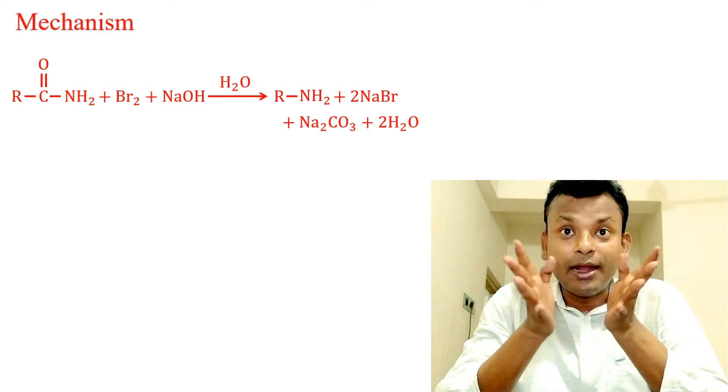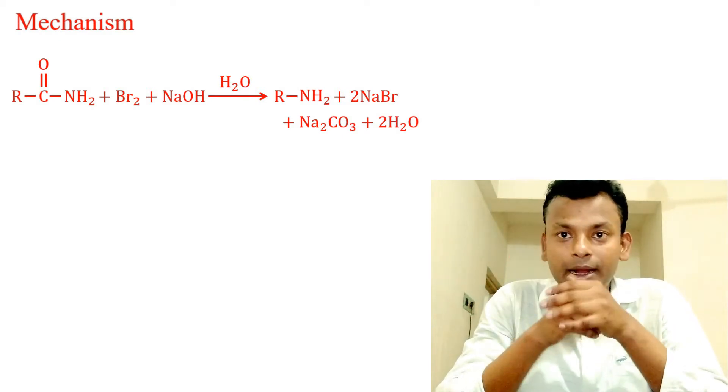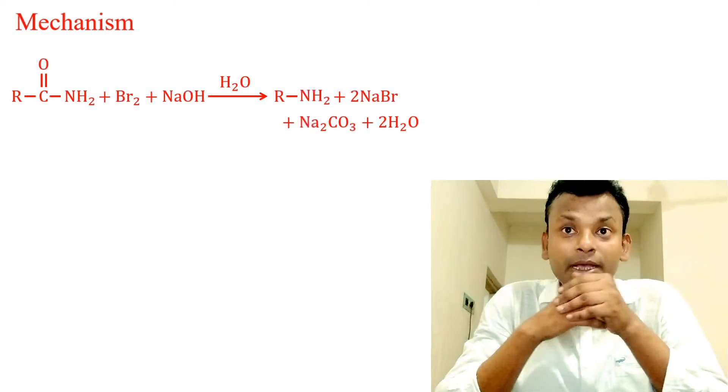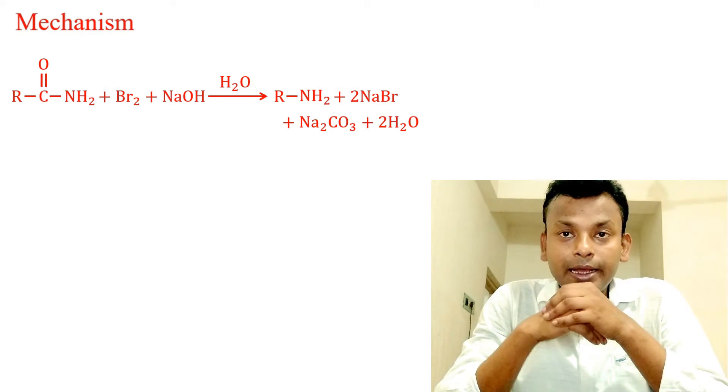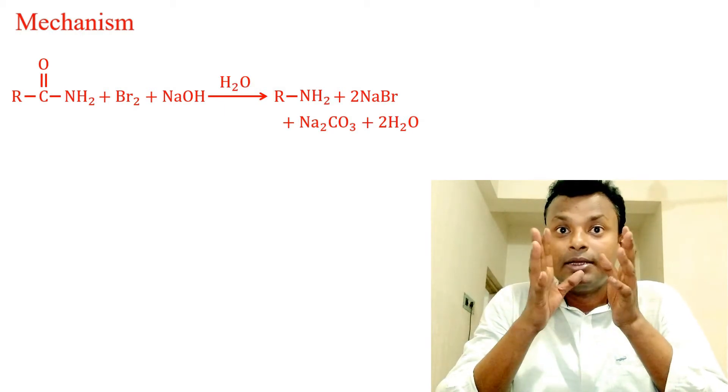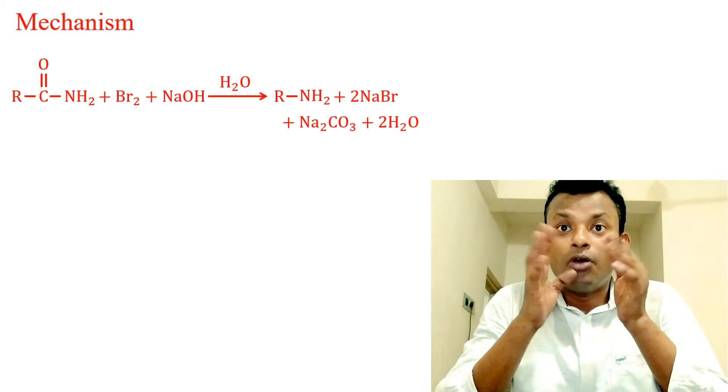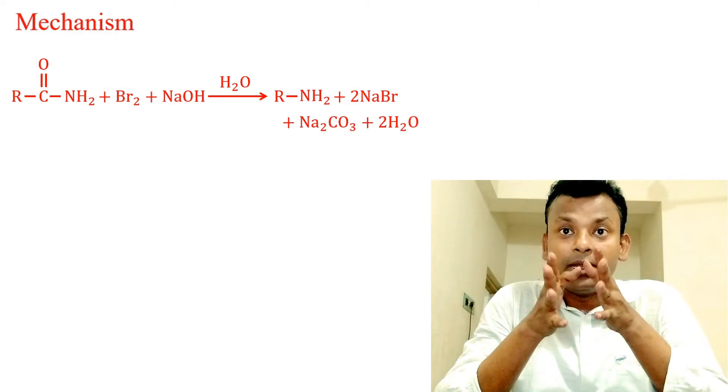The amide undergoes a base-promoted bromination in a manner analogous to the base-promoted halogenation of a ketone. The electron-withdrawing acyl group of the amide makes the amido hydrogen much more acidic than those of an amine.